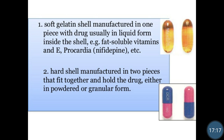In the case of hard gelatin capsules, there are two parts — body and cap. The hard shell is manufactured in two pieces that fit together and hold the drug either in powder or granular form. In the body of hard gelatin capsules, we can add either powder or granules and close it with the cap. There are also different types of hard gelatin capsules available.